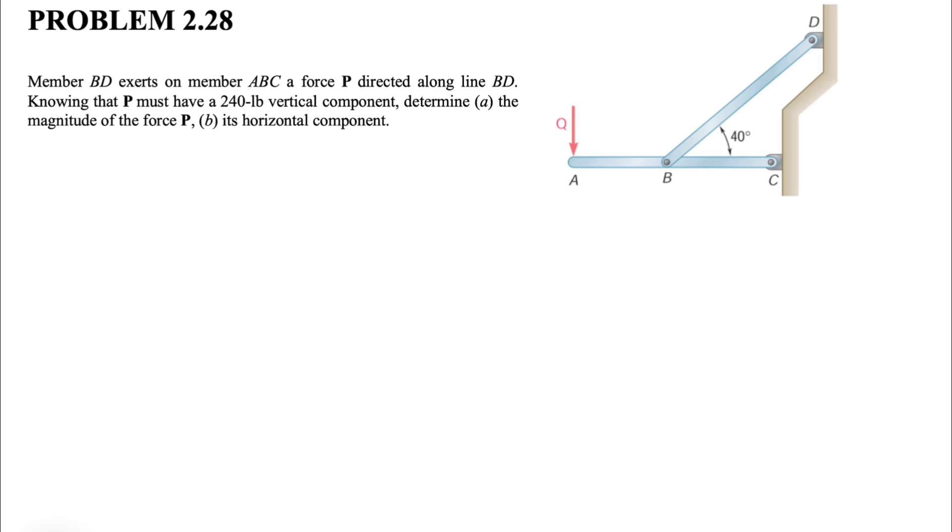We know that P must have a 240 pound vertical component, and in the A part of the question, we need to determine the magnitude of the force P, and in the B part, we have to find its horizontal component.